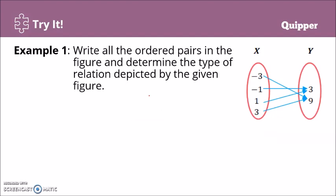Next: write all the ordered pairs in the figure and determine the type of relation depicted by the given figure. Let's write them. Write all the ordered pairs in the figure. We have negative three is associated to nine, negative one is associated to three, positive one is associated to three, positive three associated to nine.